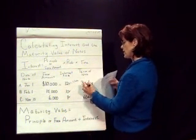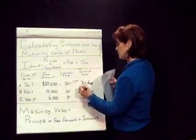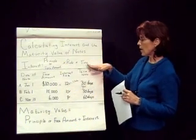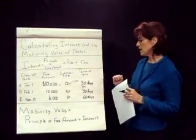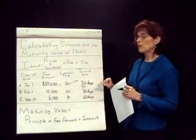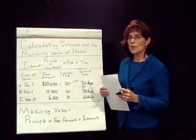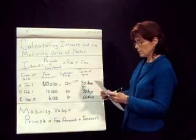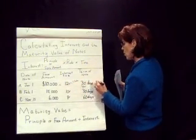Then we multiply that by 30 days over 360 days. Notes use 360 days as the basis for interest calculations — I know there are 365 days in a year, but for the purpose of calculating notes, 360 days are used. So if we take $1,200 times 30 over 360, we get $100.